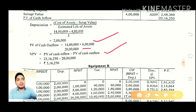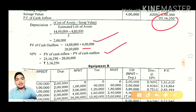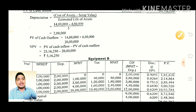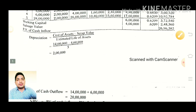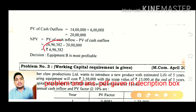Net present value equals PV cash inflow minus PV cash outflow of 20 lakhs. The PV cash inflow is calculated, giving a net present value. For Equipment B, the net present value is 6,96,320.